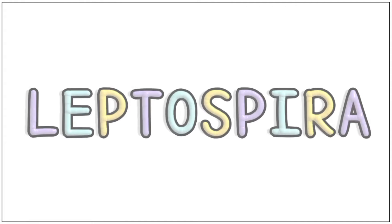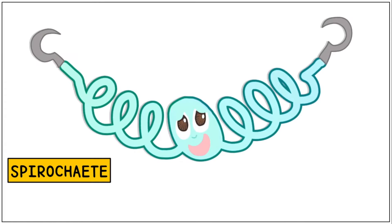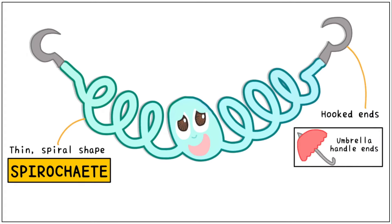Today we are going to look at another microorganism: Leptospira. Leptospira belongs to the spirochete family. It has a thin spiral shape with numerous closely placed coils. Its characteristic feature is hooked ends, also called umbrella handle ends because of its shape.